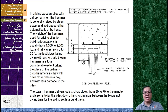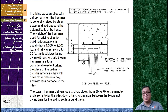In driving wooden piles with a drop hammer, the hammer is raised by steam power and dropped either automatically or by hand. The weight of the hammer used for driving piles for building foundations is usually from 1,500 to 2,500 pounds, and the fall varies from 5 to 20 feet — about 6 meters. Steam hammers are taking the place of ordinary drop hammers as they drive more piles in a day with less damage. The steam hammer delivers quick short blows at 60 to 70 per minute, jarring the piles down with short intervals that don't allow the soil to settle around them.